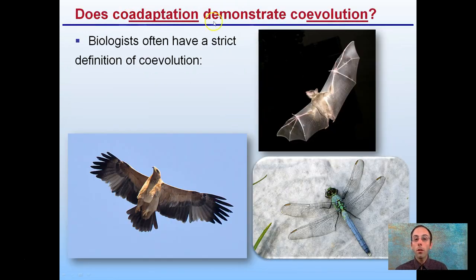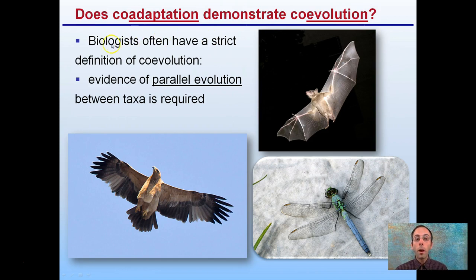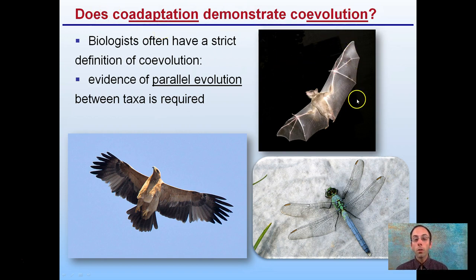How does co-adaptation demonstrate co-evolution? Biologists often have a strict definition for co-evolution: evidence of parallel evolution between taxa — referring to a broad definition or classification — is required. Does co-adaptation demonstrate co-evolution? Adaptation is in the short term, and evolution is over the long term. Here we have different animal species exhibiting different wings for flight.